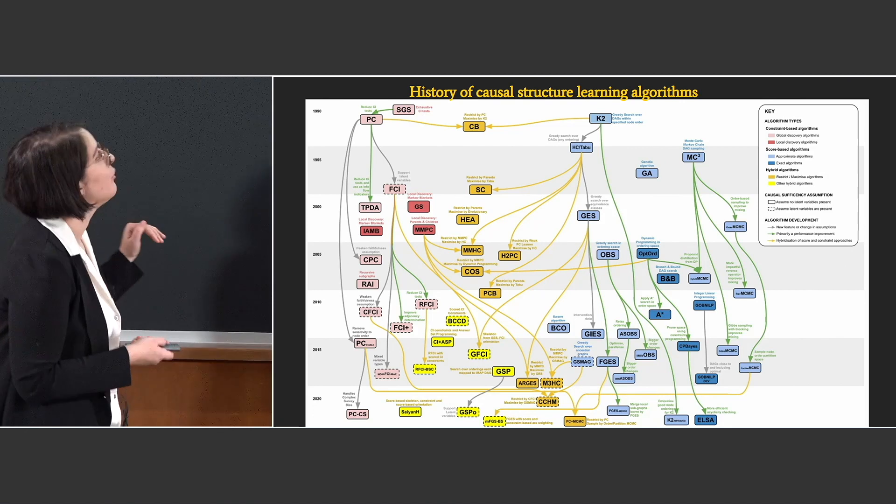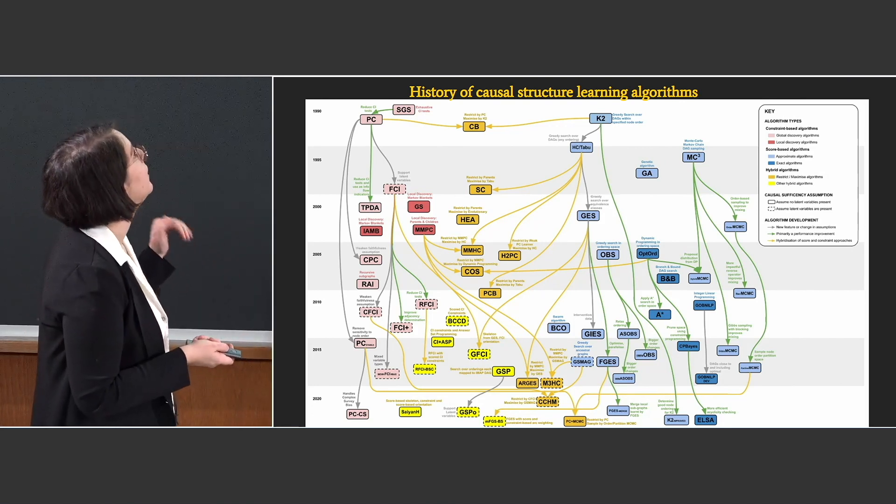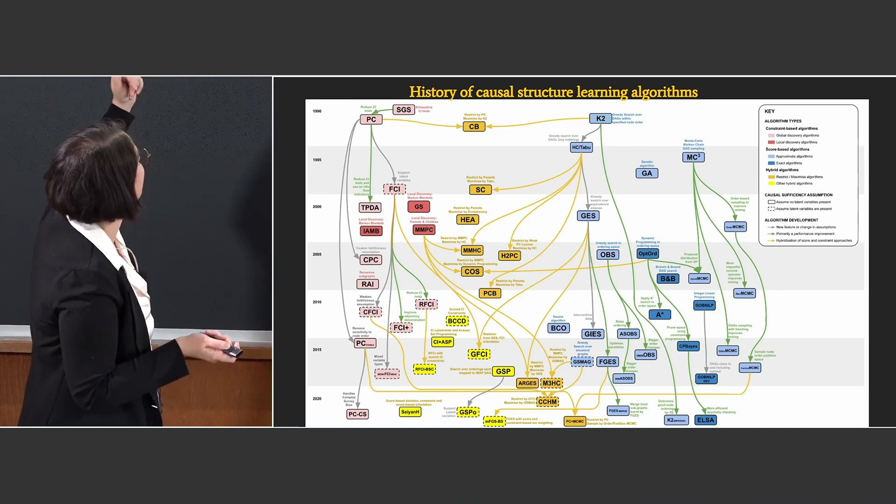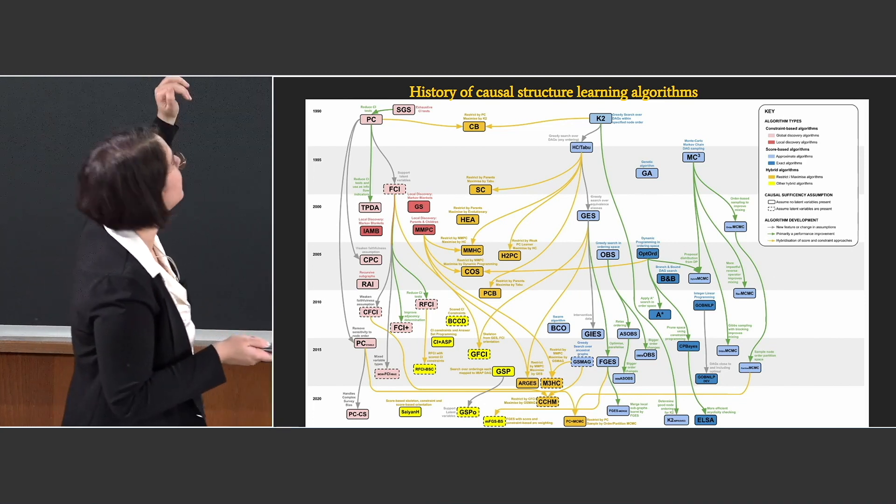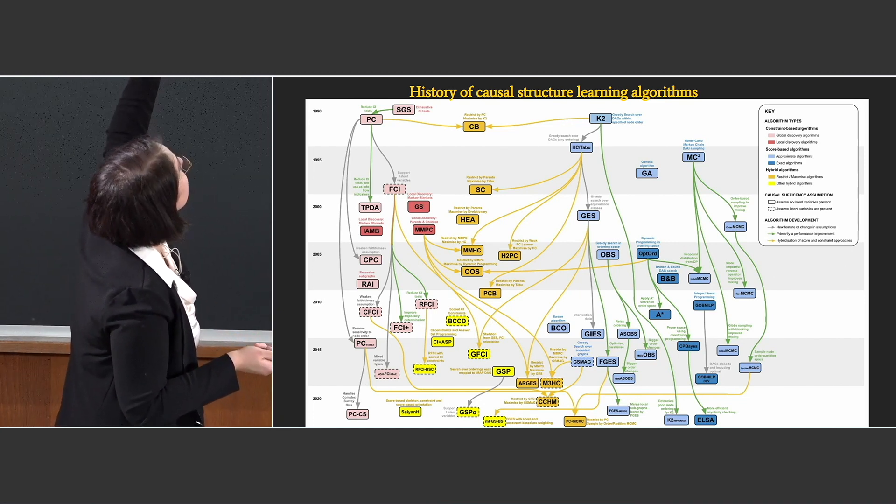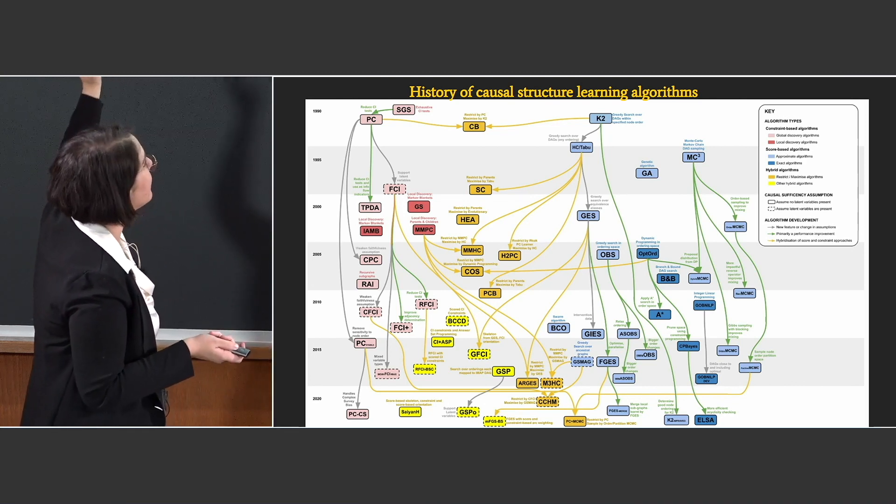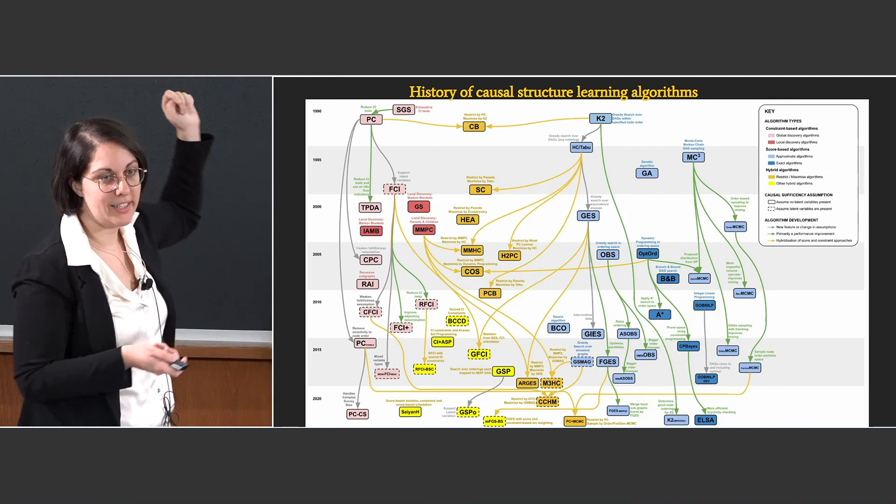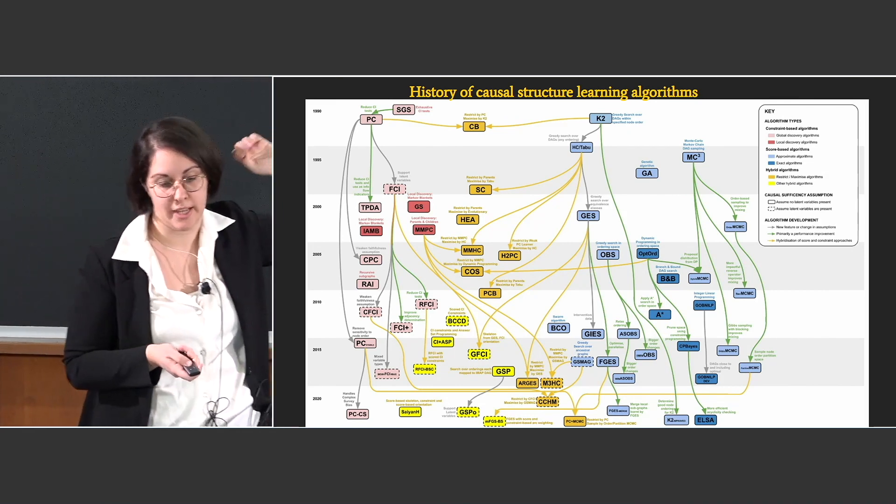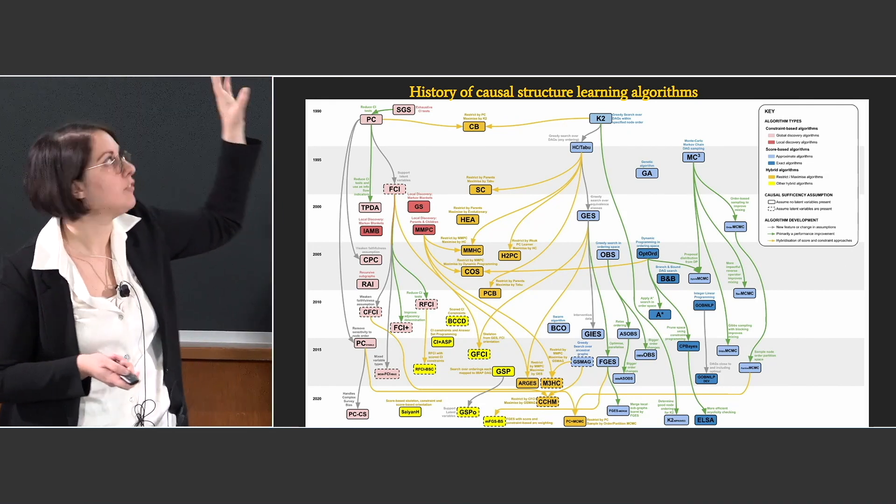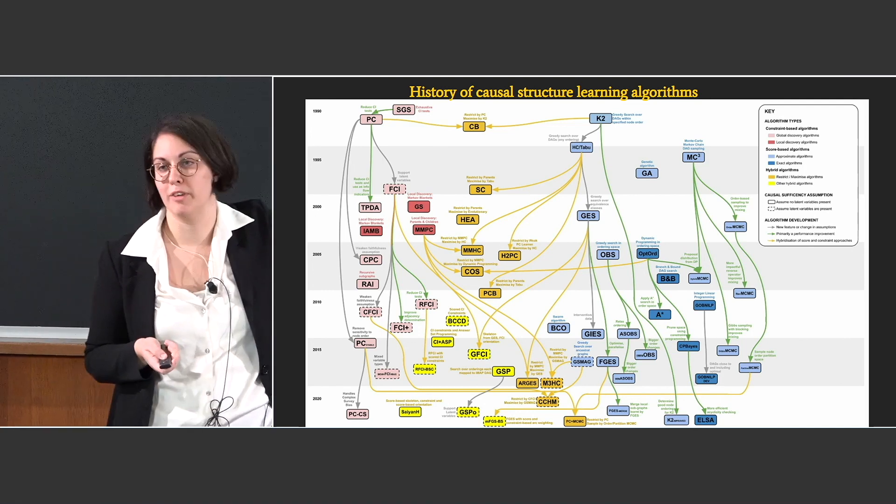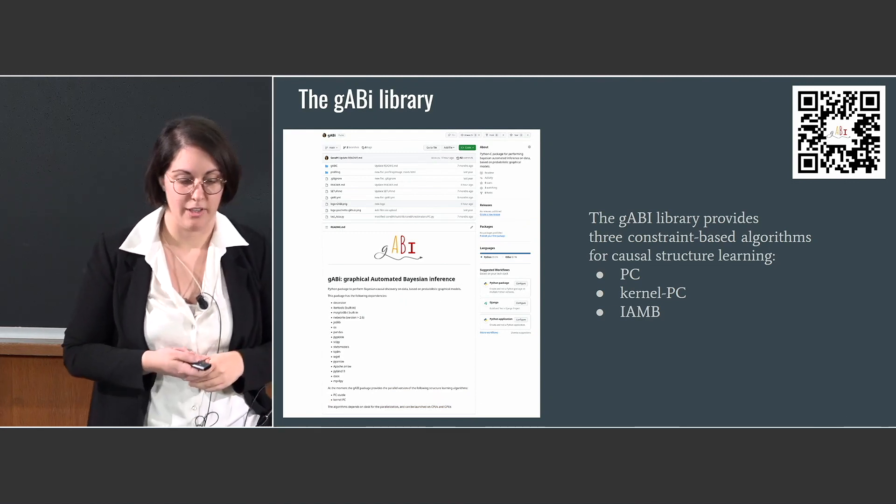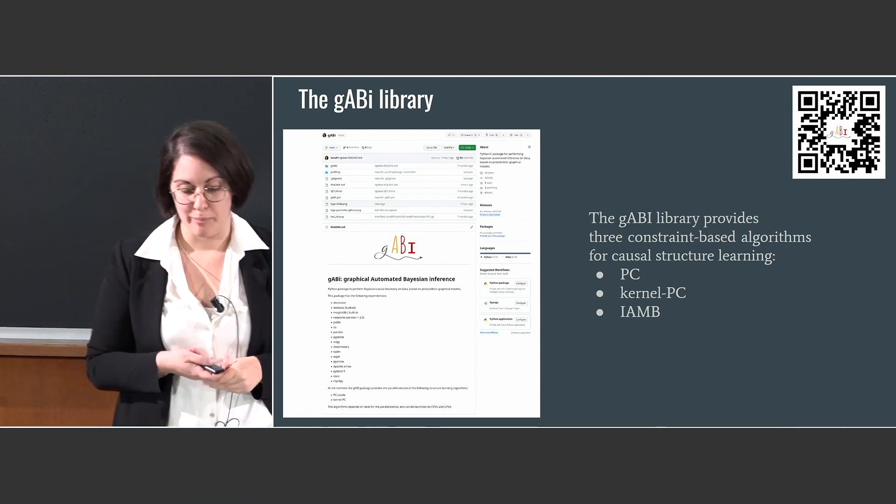And here, I summarized the evolution of all the common, more like, it is up to 2020, so it's not very updated, but from the very beginning to like three years ago, all the causal structure learning algorithms that you can find. And what we can observe from this diagram is that we evolved from a very few number of algorithms that were very basic to a complex set of algorithms.